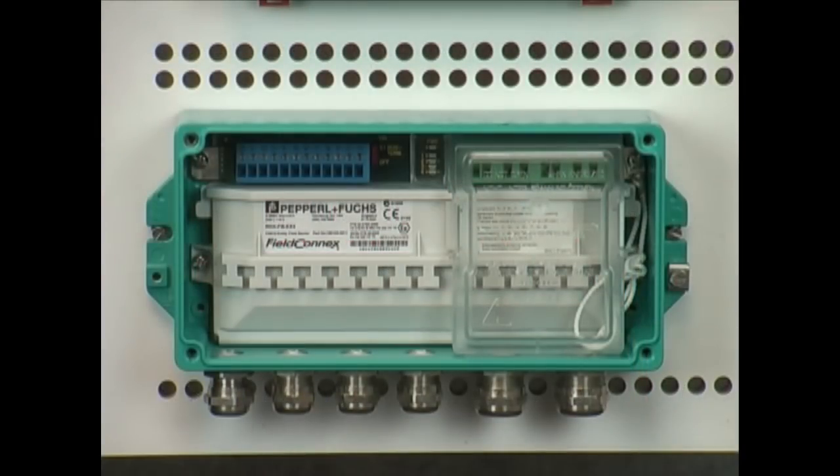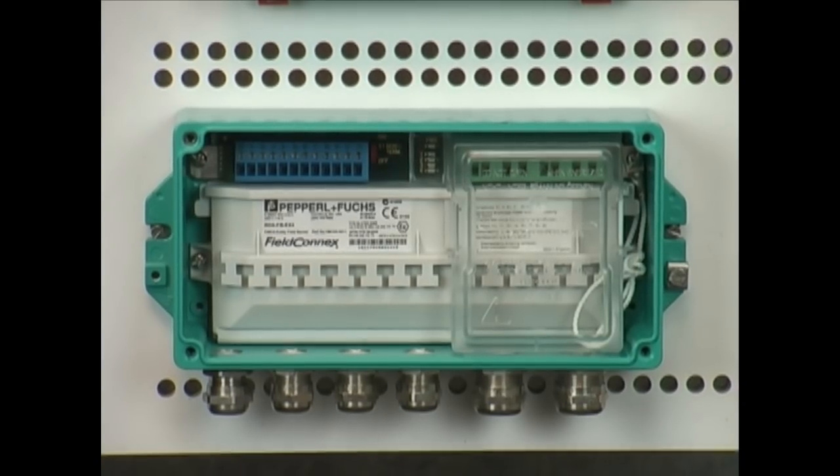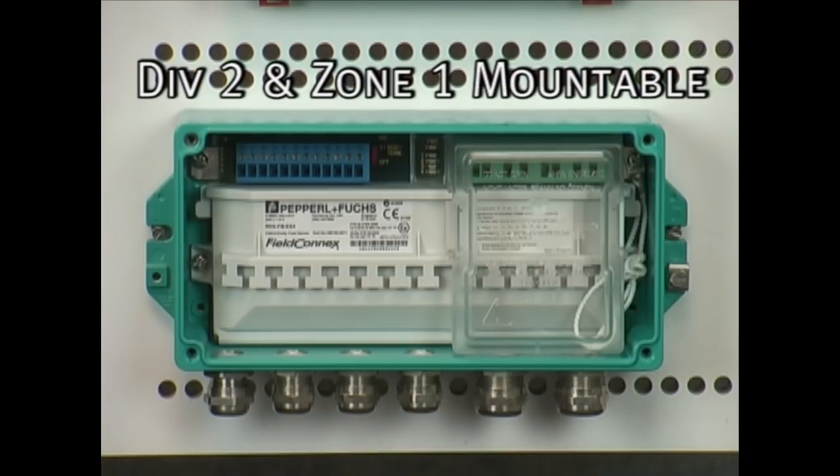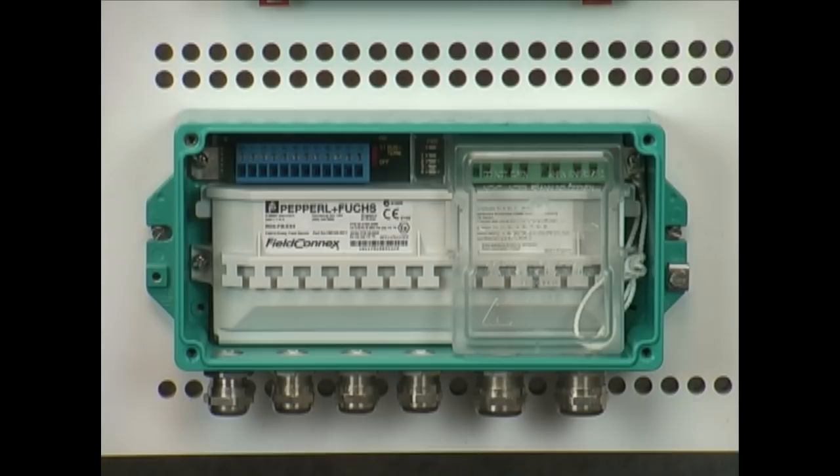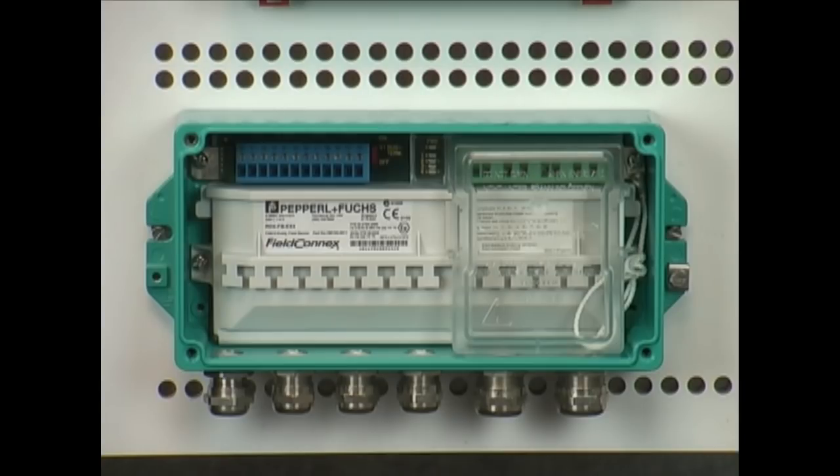Another option for field distribution when using the high power trunk concept is the field barrier. This is a Division 2 mountable, Zone 1 mountable interface that provides you with four intrinsically safe outputs for use in Class 1 Div 1 or Zone 0 applications. It provides again short circuit protection for the individual spurs as well as the optional terminator.